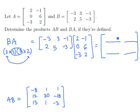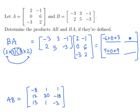The element in the first row, first column will be the dot product of the first row and first column, giving minus 6, plus 0, plus 3. The second row, first column dot product gives 4, plus 0, plus 9. The first row, second column takes the first row of B dotted with the second column of A, giving 3 plus 18 minus 2. The second row, second column dotted together gives negative 2, plus 30, minus 6.